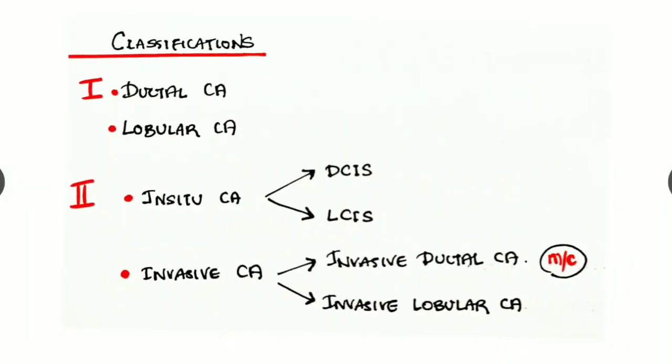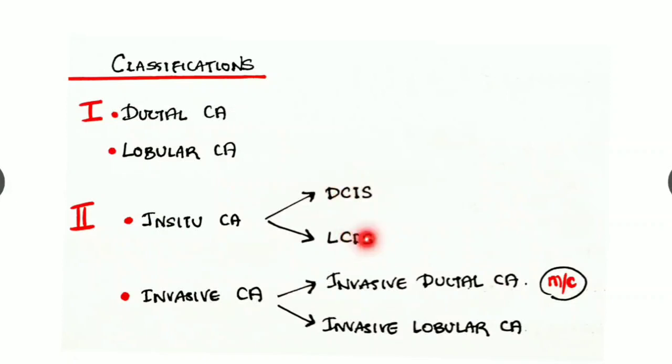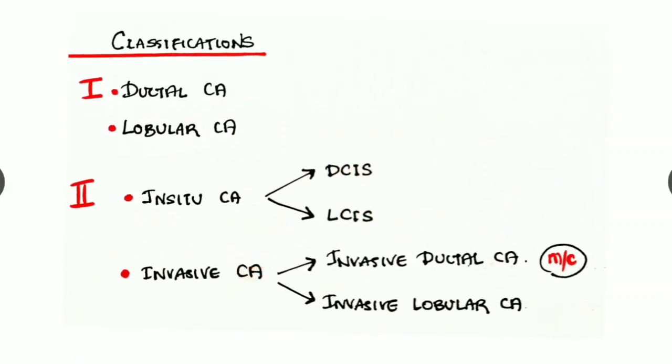Some simple classifications: first, we can classify carcinoma into ductal carcinoma and lobular carcinoma. Secondly, we can classify it into in situ carcinoma and invasive carcinoma. In situ carcinoma can be ductal carcinoma in situ or lobular carcinoma in situ, that is DCIS and LCIS. Invasive carcinomas are of two types: invasive ductal carcinoma, which is the most common type, and invasive lobular carcinoma.